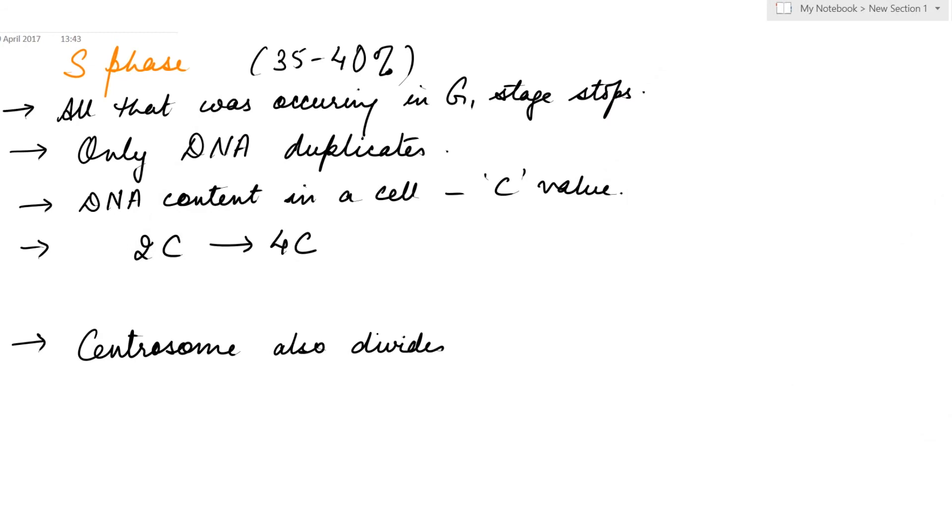Then the cell enters the S phase or the synthetic phase, which occupies 35 to 40 percent of the cell cycle. As the cell enters the S phase, all that was being synthesized during the G1 stage comes to a stop. During this stage, only DNA duplicates.